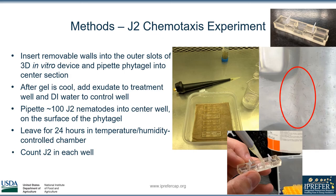To prepare the choice experiment, we insert the removable walls into the outer slots of the 3D in vitro device, which can be seen in the top right of the slide. We then pipetted phytogel into the center section and adjacent corridors. Phytogel is an agar-like substance with properties that assist with the observation of nematodes — notably, it is transparent and enables simple observation under the stereo microscope. After the gel is cooled, we add exudate to the treatment well and DI water to the control well. We then pipetted about 100 J2 nematodes into the center well on the surface of the phytogel and left that for 24 hours in a temperature and humidity controlled chamber. After that 24-hour period, we counted the J2s in each well using the stereo microscope.